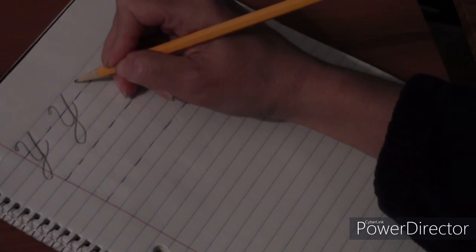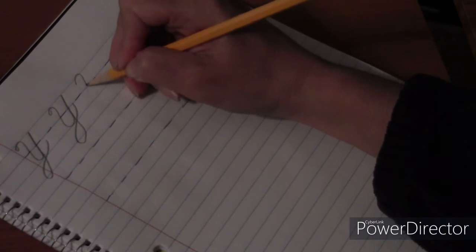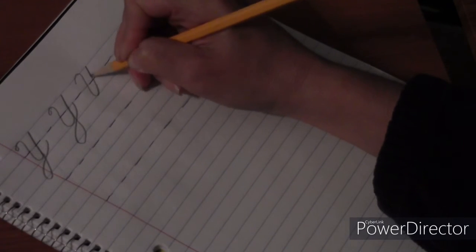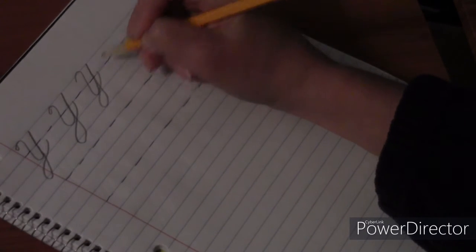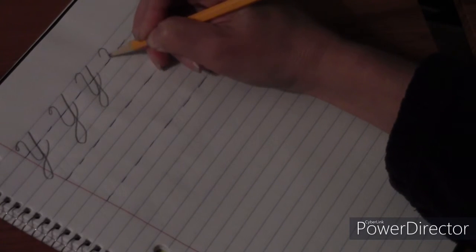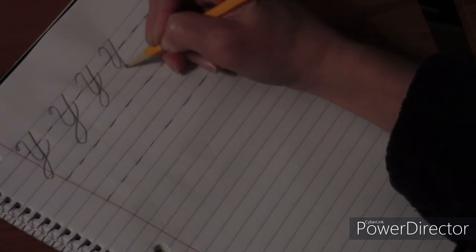Okay, remember if you can't get that tiny loop at the top, just a curve is fine. It's still a Y. Even if it just has the curve instead of the tiny loop, the tiny loop just makes it look fancier. Okay, go ahead and make five Y's. Pause the video if you need to.